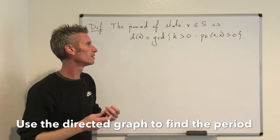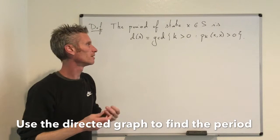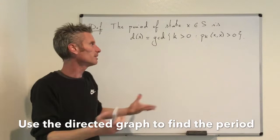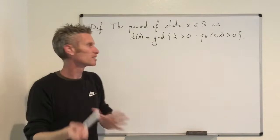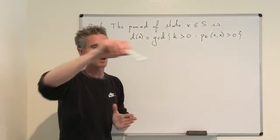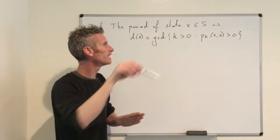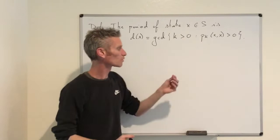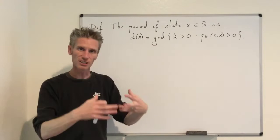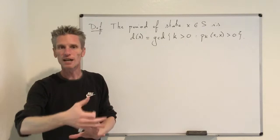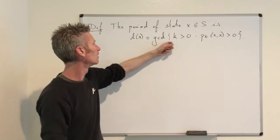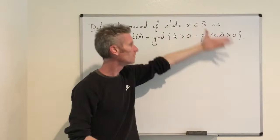If you look at all possible paths that go from x to x, you typically have infinitely many, but you have only a finite number of such paths that are self-avoiding — meaning if you take a path and remove all loops, you still get a path with positive probability. So to find the period, you find all directed paths in the directed graph going from x to x with no loops. This gives you a finite set of values k such that p^k(x,x) is strictly positive, and then you take the GCD of all these numbers.